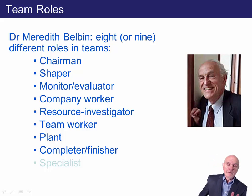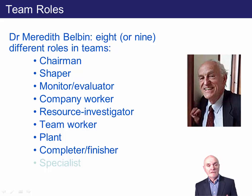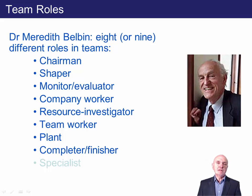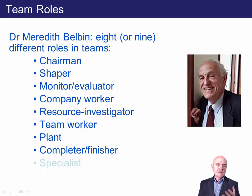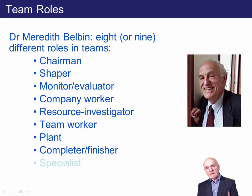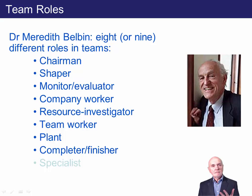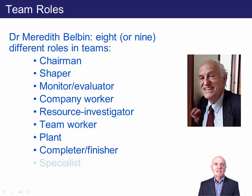Belbin identified several team roles. The chairman has natural authority, is good at placating disagreement, seeking compromises, and making sure everyone has their say. The shaper, different to a chairman, is someone with their own ideas who is quite pushy to get those ideas realised. The shaper is likely to irritate people and rub them up the wrong way. The chairman oils the wheels and tries to keep people together.